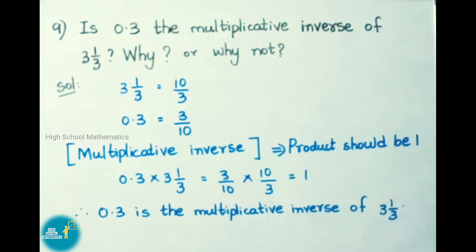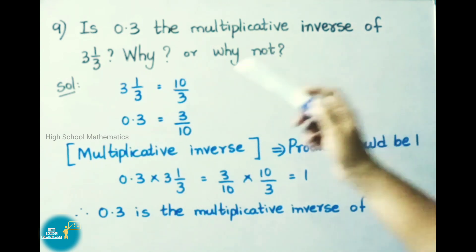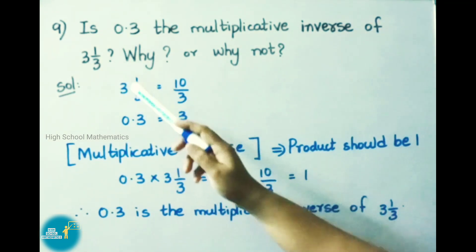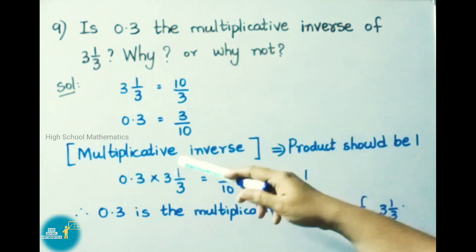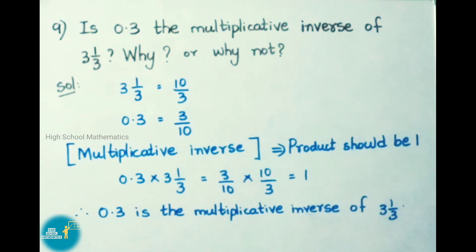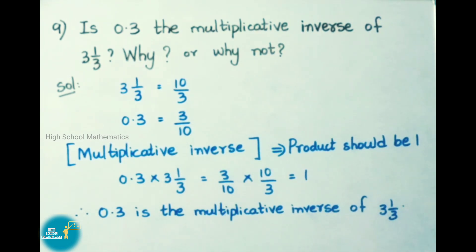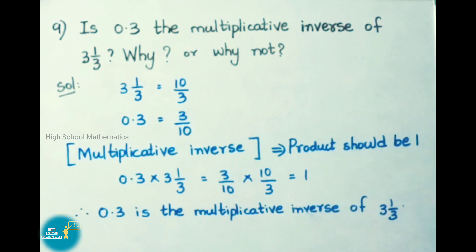Question number 9: Is 0.3 the multiplicative inverse of 3⅓? 3⅓ = 10/3, and 0.3 = 3/10. For multiplicative inverse, the product should be 1. So 0.3 × 3⅓ = 3/10 × 10/3 = 1. Therefore 0.3 is the multiplicative inverse of 3⅓.